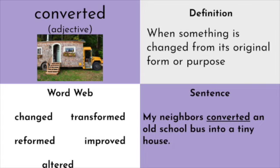Our next word is an adjective: converted. Convert is a verb meaning to change or to alter. When we add -ed, we can either make a verb past tense or turn it into an adjective. Converted means when something is changed from its original form or purpose. Word web words: changed, transformed, reformed, improved, or altered. Our sentence: my neighbors converted an old school bus into a tiny house. As you can see in the picture, there's a school bus — you can still see the front with the tires — but they've changed and altered it into a teeny tiny little cabin, which is pretty cool.